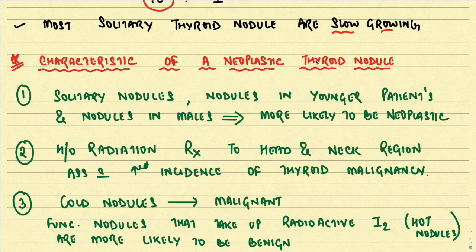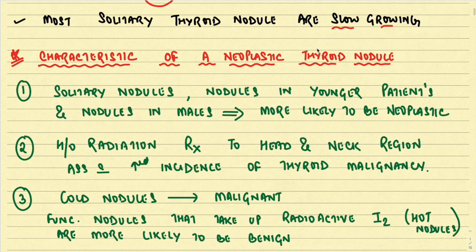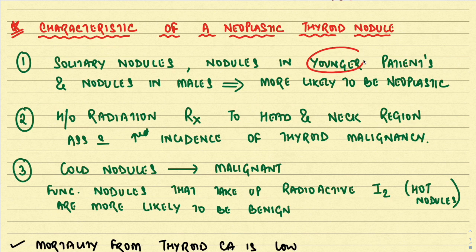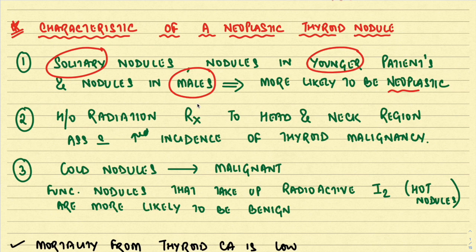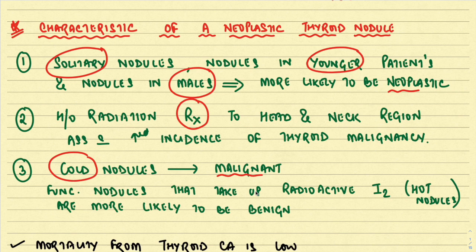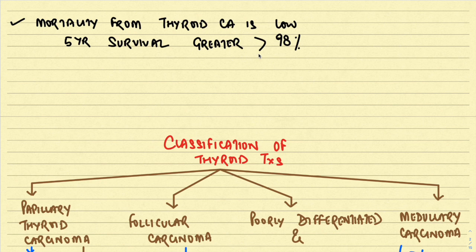The characteristics of a neoplastic thyroid nodule: solitary nodules in younger patients and nodules in males are far more likely to be neoplastic. Any history of radiation treatment or radiation therapy to the head and neck region is associated with an increased risk of thyroid malignancy, especially papillary thyroid carcinoma. On thyroid scintigraphy, if the solitary nodule is cold in nature, it is much more likely to be malignant. Hot nodules that take up radioactive iodine are much more likely to be benign. Mortality from thyroid carcinoma is quite low, with a five-year survival rate of more than 98 percent.